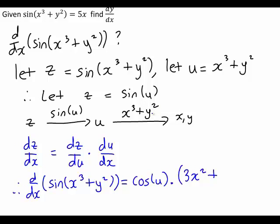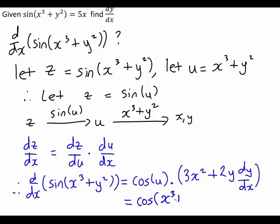Differentiating y² with respect to x, we must work out the derivative with respect to y, which is 2y, and that is then multiplied by dy/dx. So this is the derivative with respect to x of sin(x³ + y²). Substituting back u = x³ + y², it becomes cos(x³ + y²) multiplied by (3x² + 2y dy/dx).